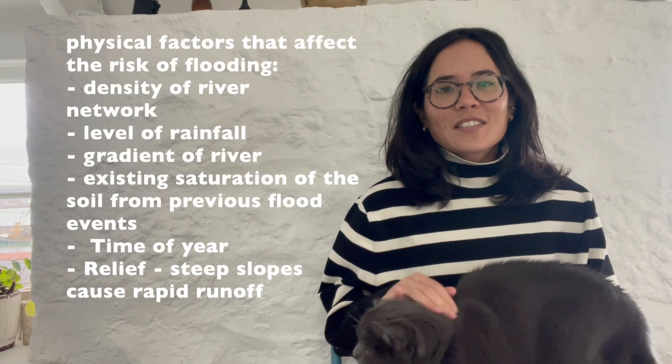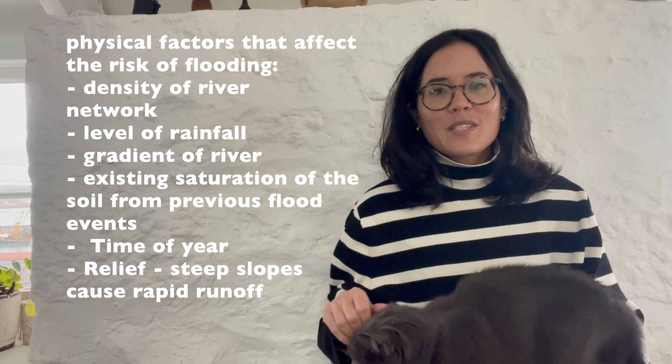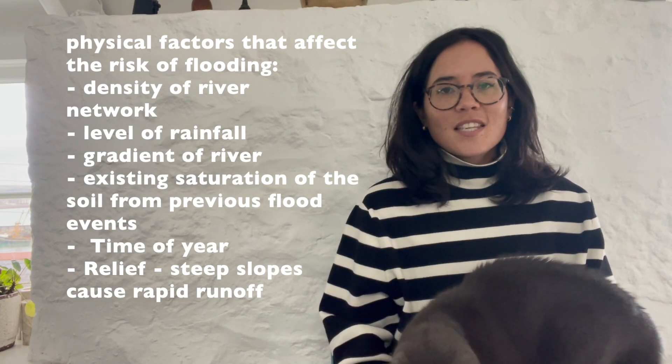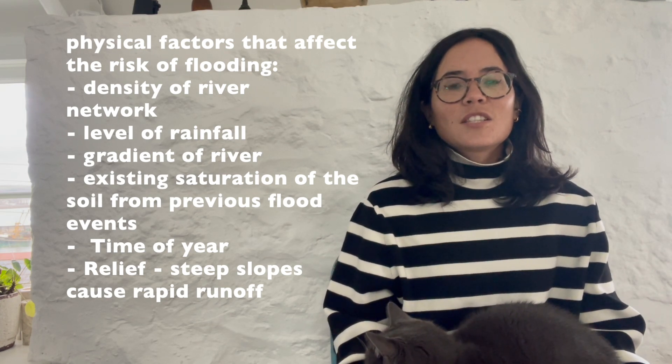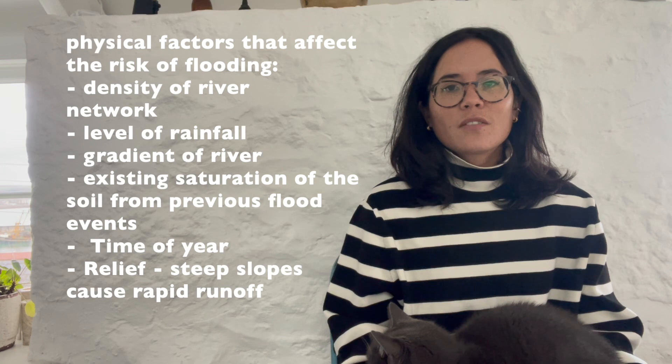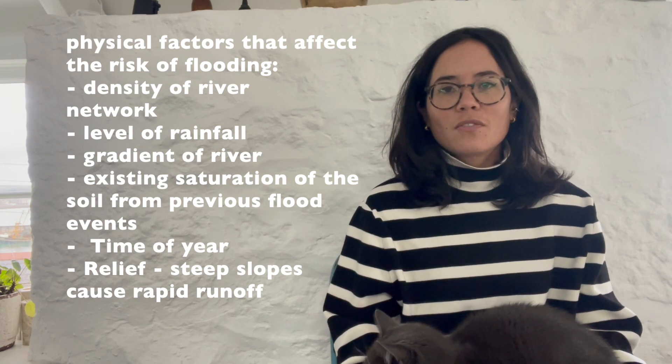So what physical factors affect flooding? The level of precipitation or rainfall, the density of the river network, its gradient, any existing saturation of the soil from previous flood events, the time of year and seasonal changes — when there's been a lot of snowfall and the temperature increases, you'll get a snow melt which increases the river's discharge — and the steepness of slopes, so the relief of the land. The steeper the slope, the increased chance of runoff and flooding.